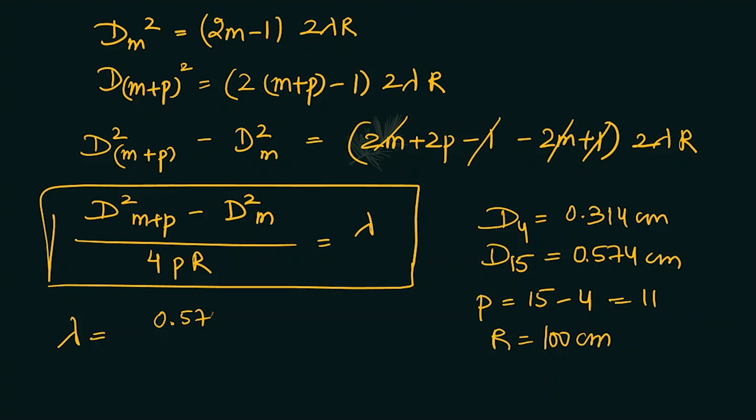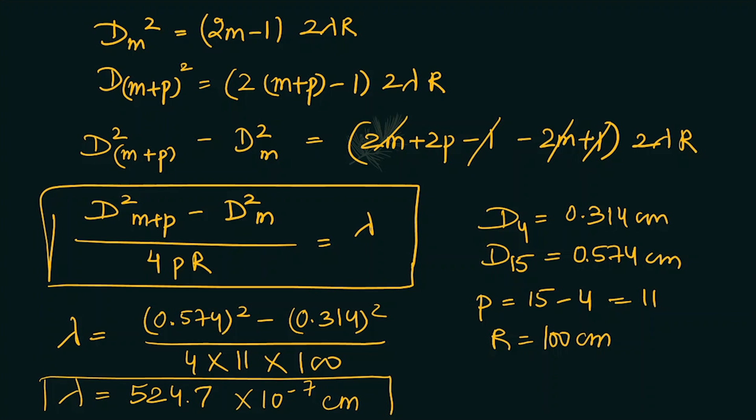0.574² minus 0.314² divided by 4 × 11 × 100. So this value comes out to be 524.7 × 10^-7 centimeter. So this is our lambda.